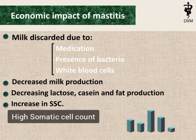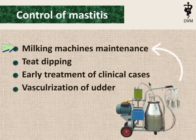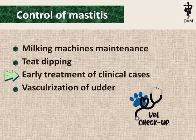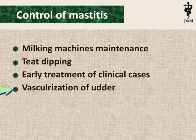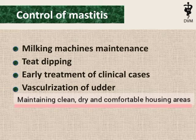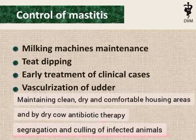Mastitis can economically destroy livestock farming and is a serious animal health issue. Control measures include milking machine maintenance, teat dipping, early treatment of clinical cases, vascularization of the udder, maintaining clean, dry, and comfortable housing areas, dry cow antibiotic therapy, and segregation and culling of infected animals.